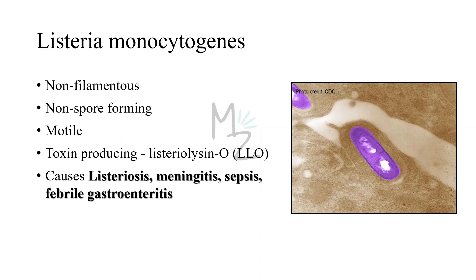Listeria monocytogenes is non-filamentous and non-spore-forming, but it is motile because it exhibits an unusual tumbling motility that distinguishes it from Corynebacterium diphtheriae, which is non-motile. Listeria monocytogenes produces a toxin called Listeriolysin O, or LLO. It is responsible for causing listeriosis, meningitis, and sepsis in newborns, pregnant women, and immunosuppressed adults.